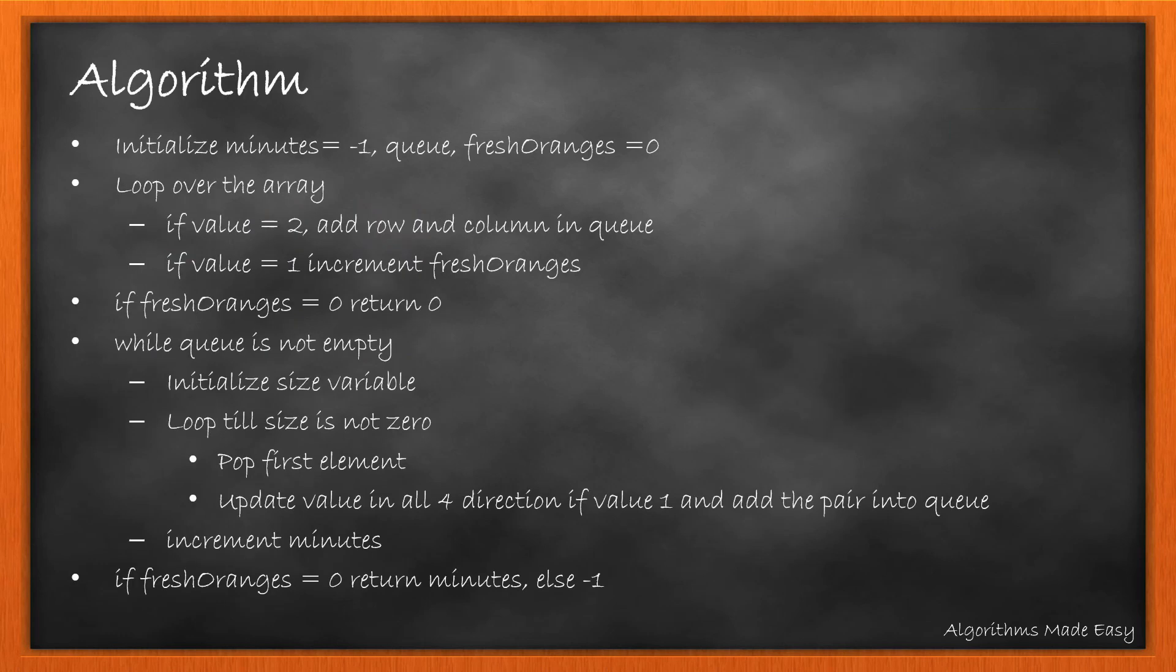Summarizing all the steps, we first initialize the minutes variable to minus 1, a queue, and fresh orange to 0. We loop over the grid and add index into the queue if the value is 2 or increment fresh orange when the value is 1. If fresh orange is 0, then we return 0.